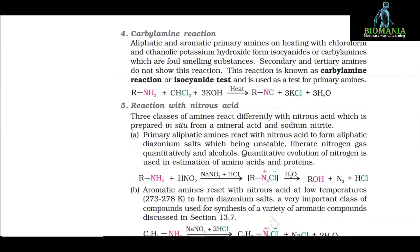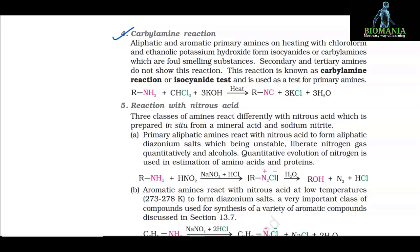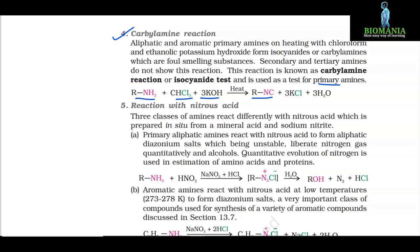Reaction 4: Carbylamine reaction. Aliphatic and aromatic primary amines on heating with chloroform and ethanolic potassium hydroxide form isocyanides (carbylamines), which are foul-smelling substances. Secondary and tertiary amines do not show this reaction. This reaction is known as the carbylamine reaction or isocyanide test and is used as a test for primary amines: RNH2 + CHCl3 + 3KOH → RNC + 3KCl + 3H2O.